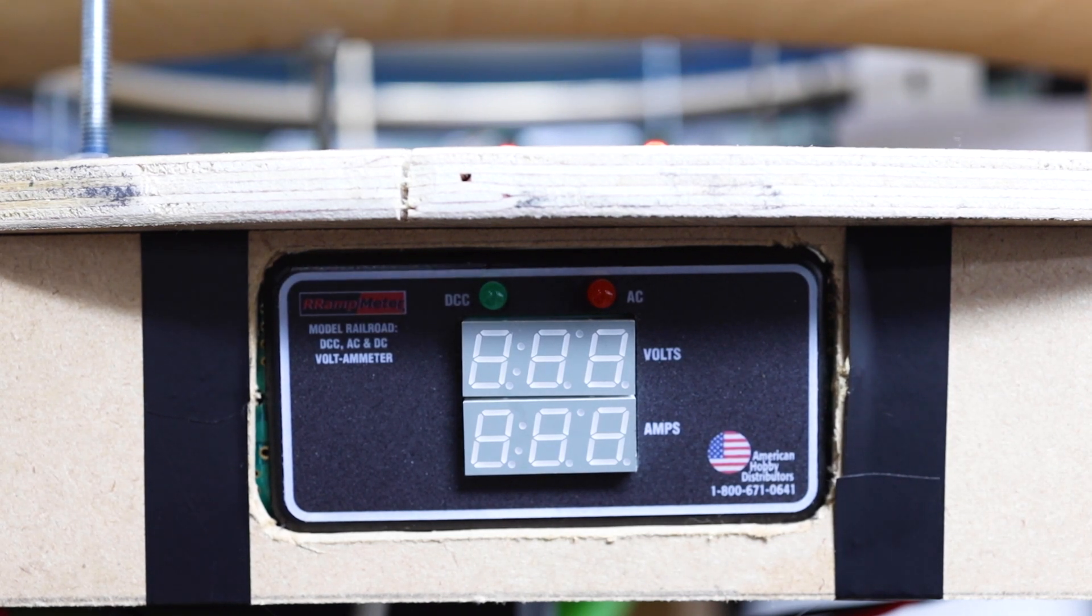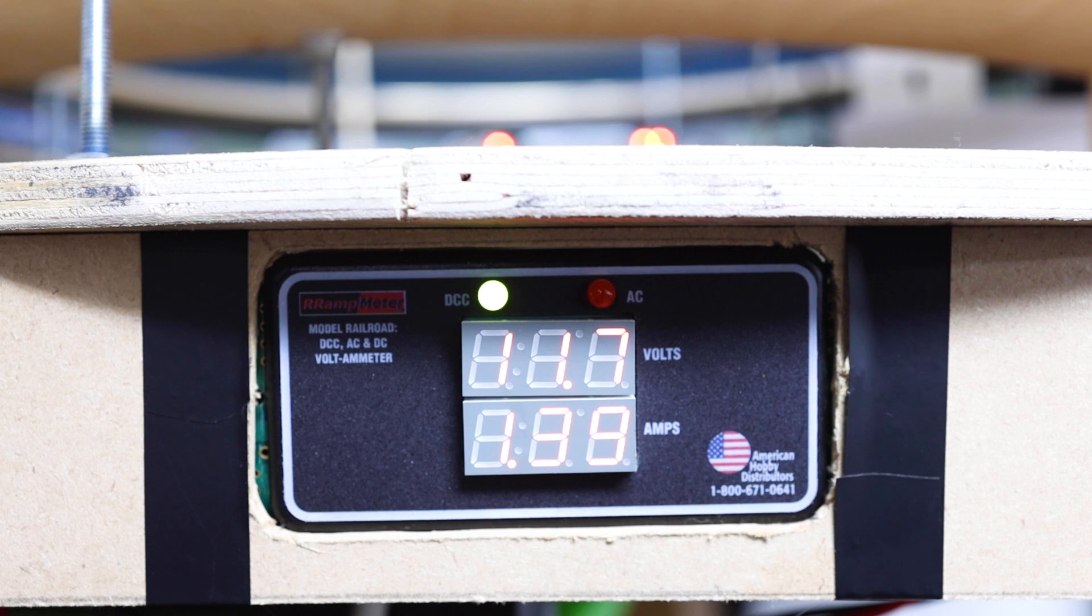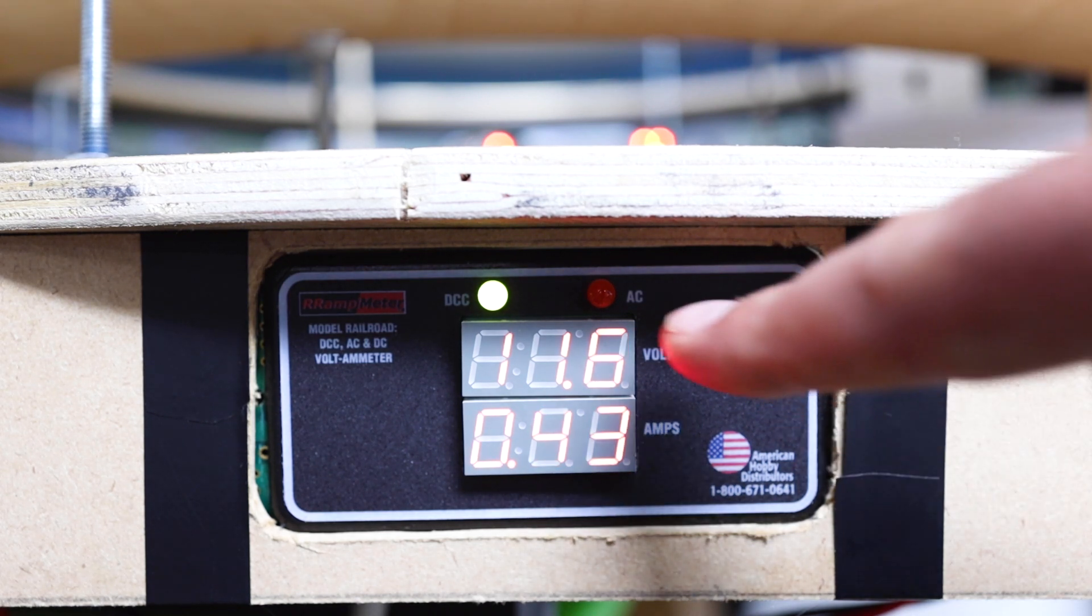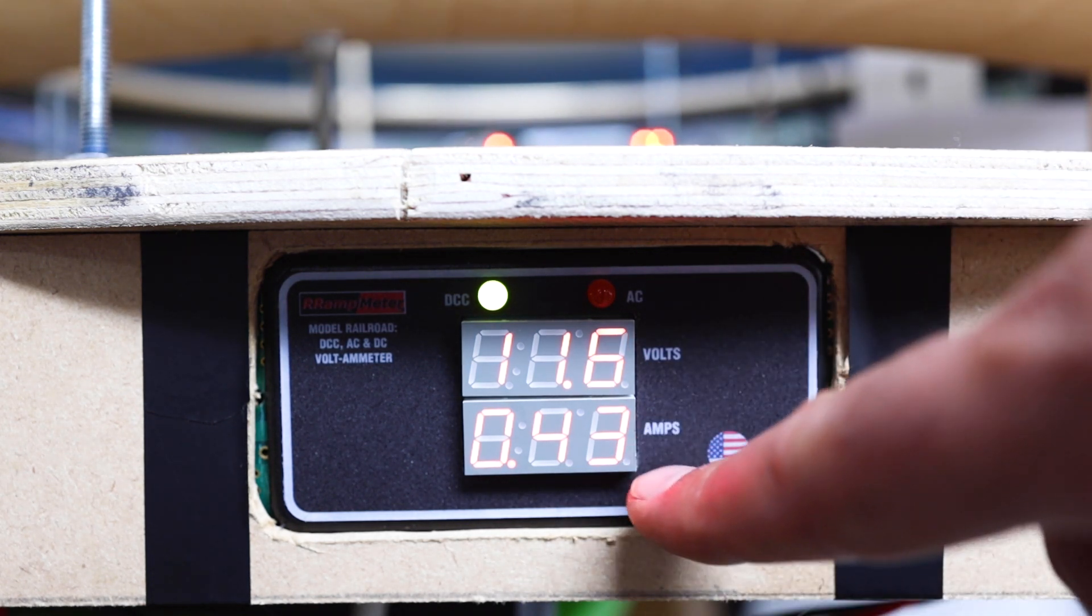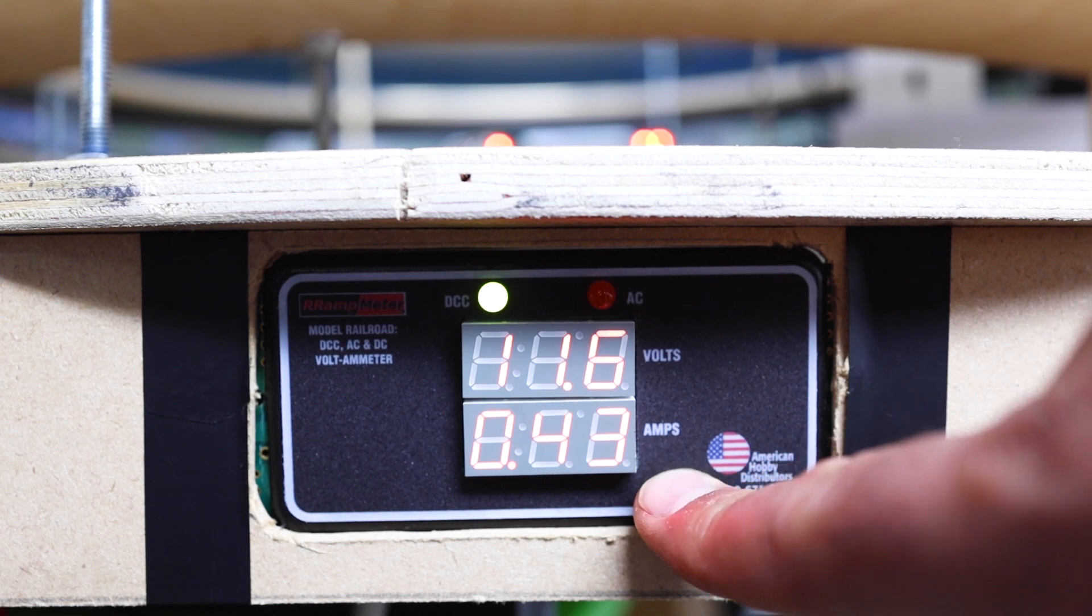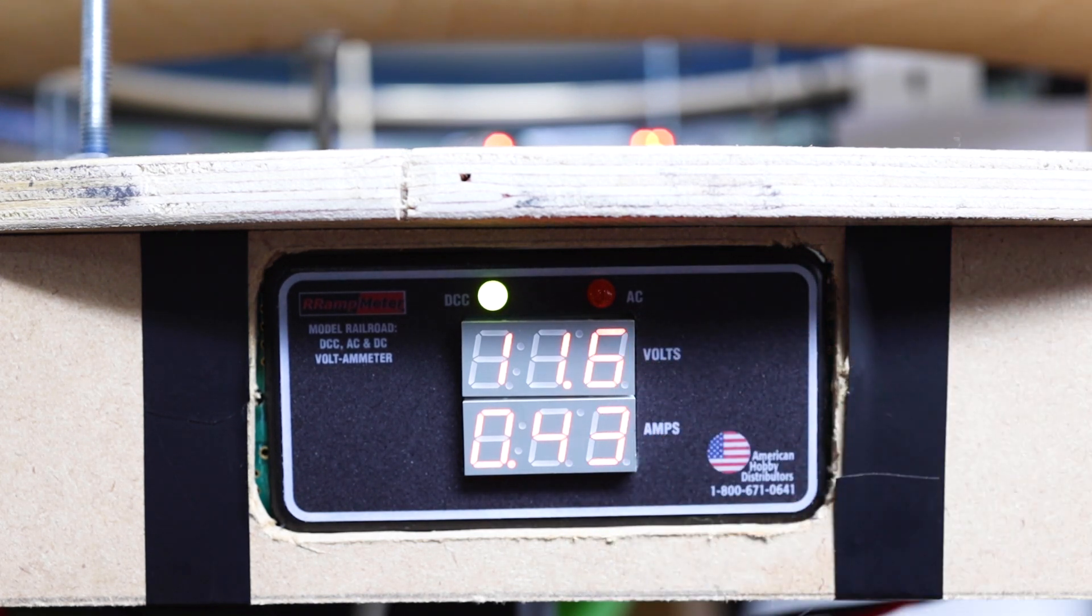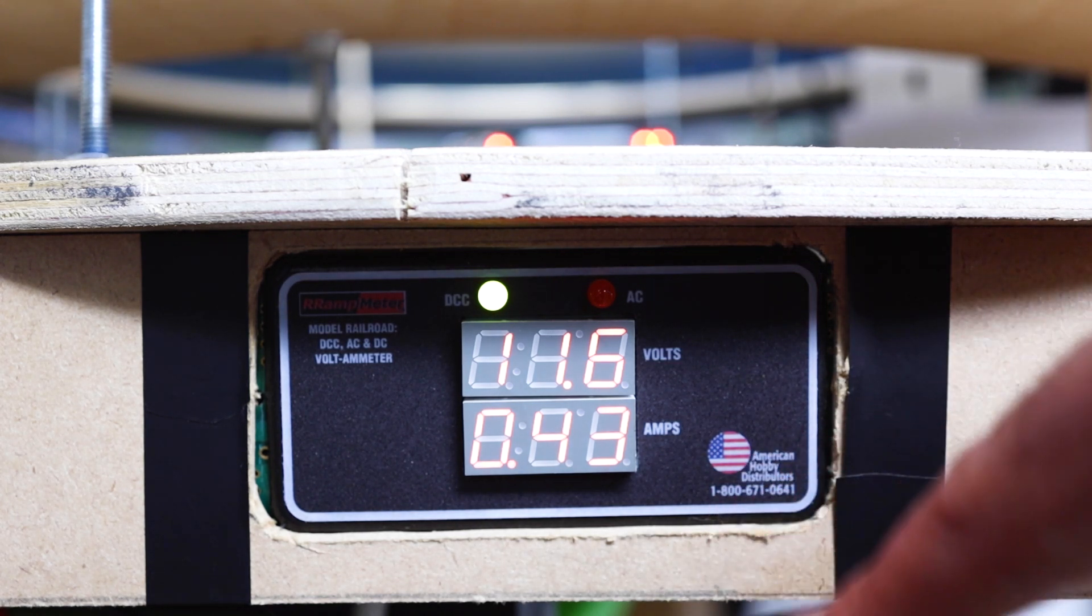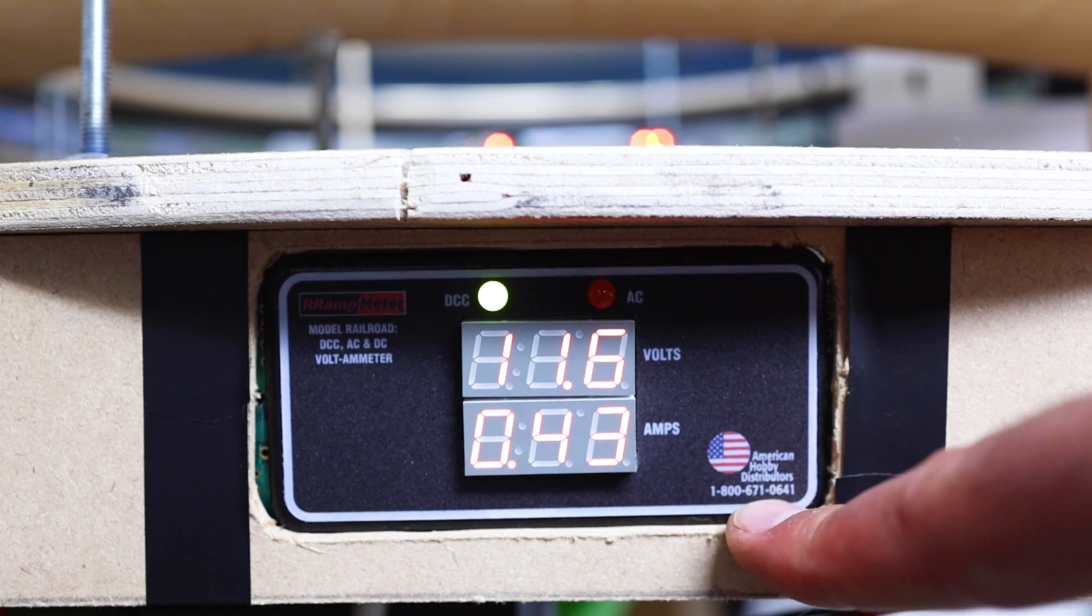Here's a close-up of the amp meter. You can see everything's switched off at the moment. I'm going to switch the power to the layout on. Now you can see it all fires up. What it's giving at the moment, it's fluctuating between 11.6 to 11.7 volts at the top and then 0.43 amps at the bottom.